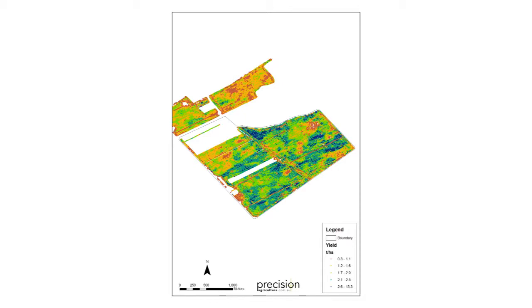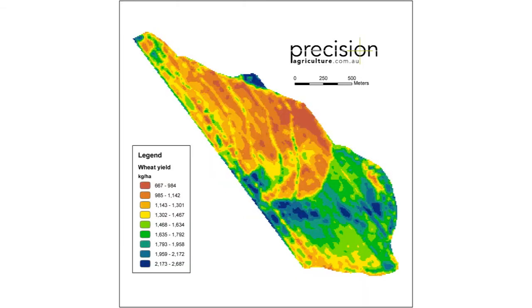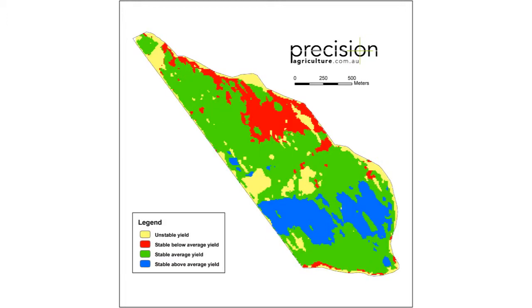At the end of the season, with a yield map we can come back and do some assessments to work out whether we've made good decisions with the site-specific crop management. Collecting yield data is a fantastic place to start.